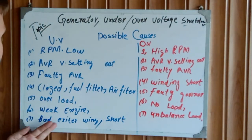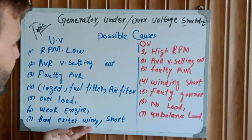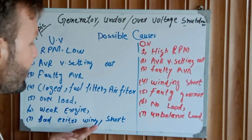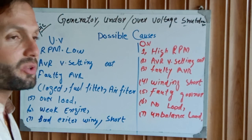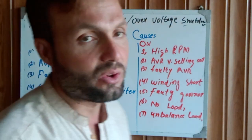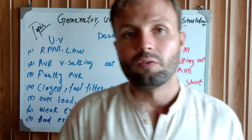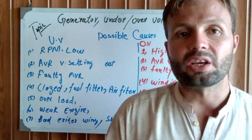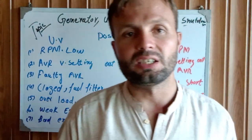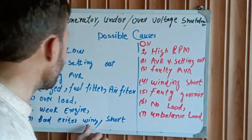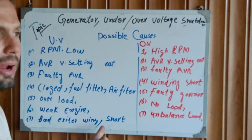The last possible cause for under voltage is a defective excitation winding or a short in the excitation winding. The alternator has a separate excitation winding which works for the excitation system of the alternator. When the excitation winding is shorted or bad, this causes under voltage.